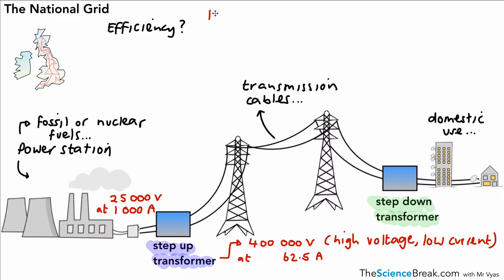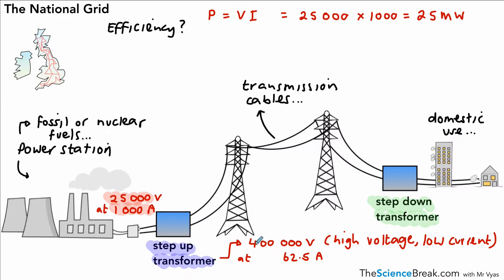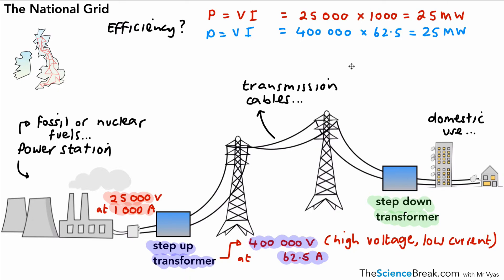We can work out why by doing a simple equation. Power is voltage (or potential difference) times current. If we calculate that for the numbers supplying the transformer — 25,000 volts times 1,000 amps — that gives us 25 million watts, or 25 megawatts of power. If we do the same calculation after the step-up transformer — 400,000 volts times 62.5 amps — that also works out at 25 million watts, or 25 megawatts. So the power is the same for both scenarios.